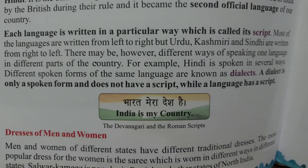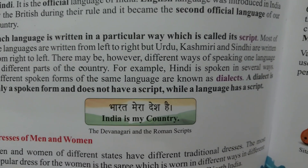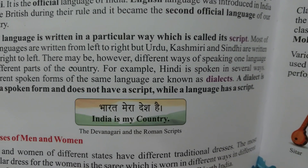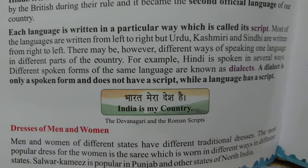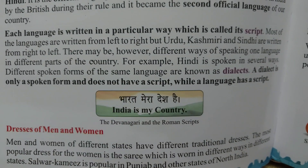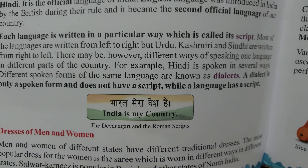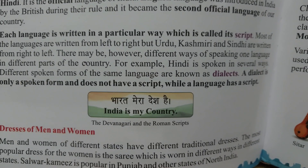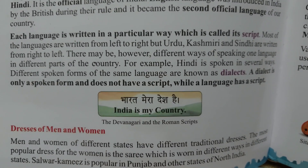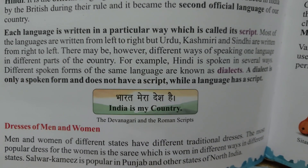Each language is written in a particular way which is called its script. Most of the languages are written from left to right, but Urdu, Kashmiri and Sindhi are written from right to left.